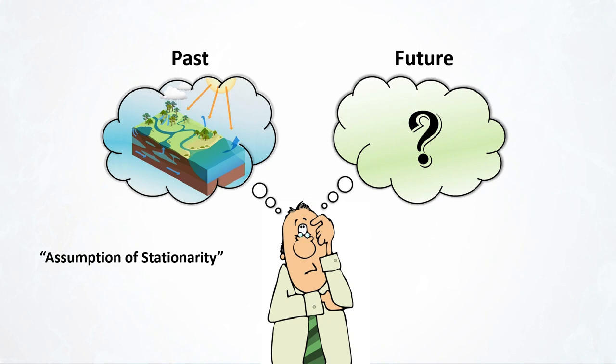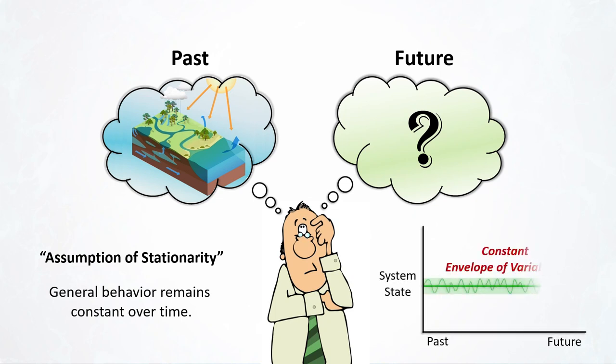Stationarity is characteristic of systems whose general behavior remains constant over time. In other words, the dynamics of stationary systems are bounded within a constant, typically known envelope of variability in the past, present, and future.